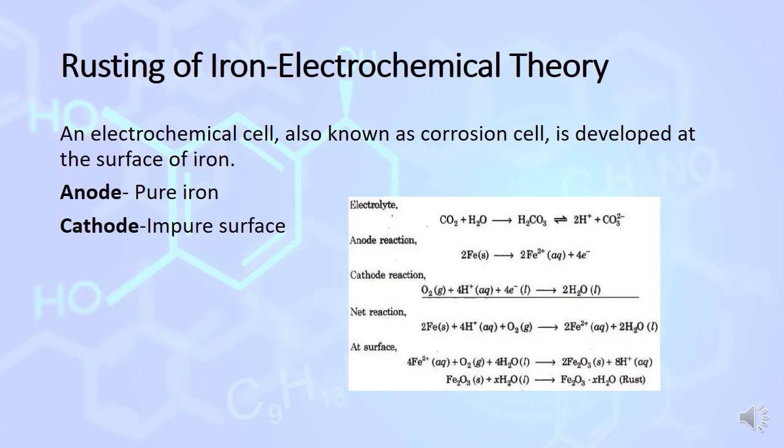Rusting of iron is an electrochemical process. In this, anode is made up of pure iron and cathode is an impure surface. When iron comes in contact with atmosphere, carbon dioxide, and water, there is a formation of carbonic acid H2CO3.